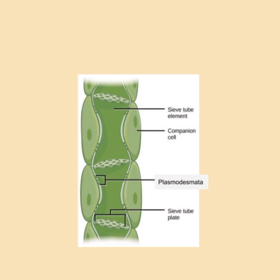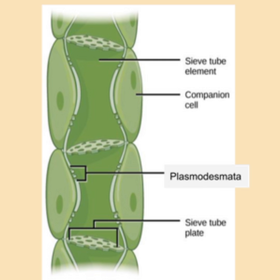Companion cells are attached to sieve tube elements via plasmodesmata, which allows the cytoplasm to be shared between companion cells and sieve tube elements. Companion cells have a nucleus and other organelles, therefore sieve tube elements need companion cells to carry out metabolic reactions.